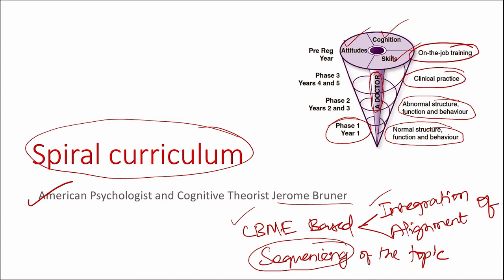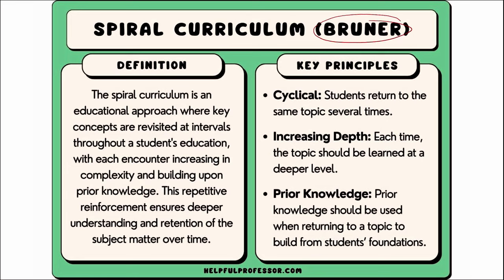Learning over time — otherwise called spaced learning — occurs. For example, when the cardiovascular system is considered in phase one and revisited in phase two and phase three. A spiral curriculum is not simply repetition of topics taught — it requires a deepening of understanding with each successive encounter building on the previous one. Features of the spiral curriculum: topics are revisited, there are increasing levels of difficulty, new learning is related to previous learning, and four dimensions are considered — increased breadth, increased difficulty, increased utility and application to practice, and increased proficiency.